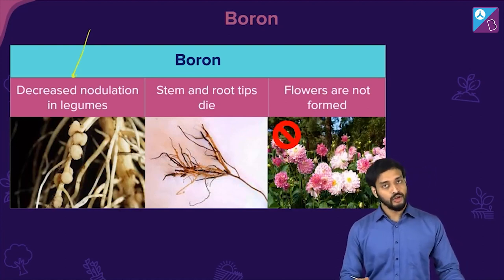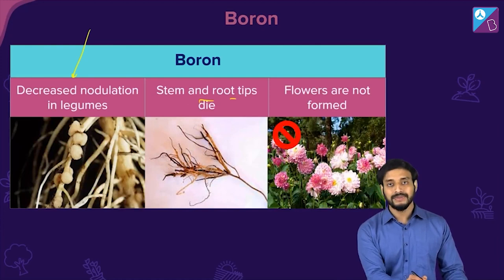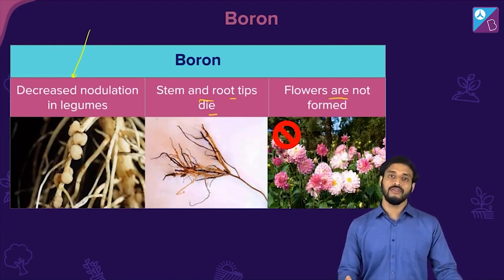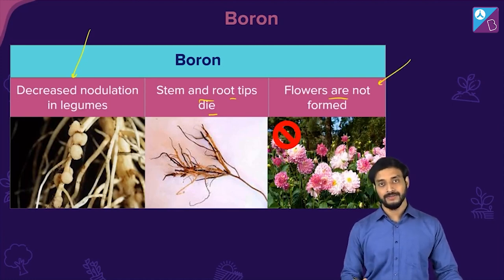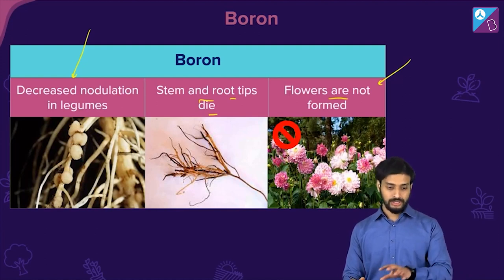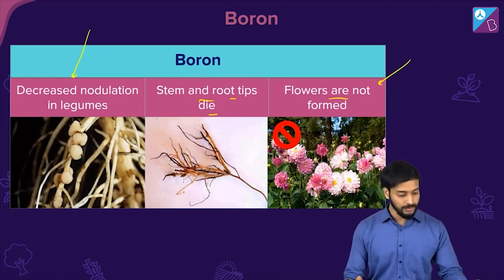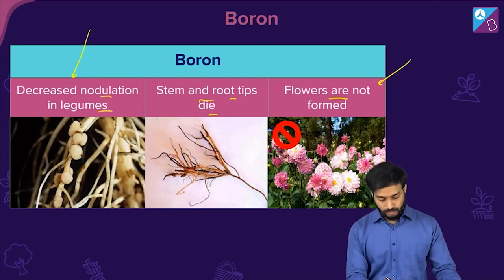Boron deficiency is also very important. It causes decreased nodulation in legumes, death of stem and root tips, and failure to form flowers. So when boron is not present in sufficient amounts, flowers are not formed, and stem and root tips die off.